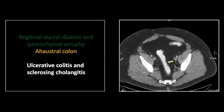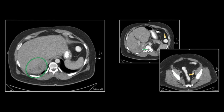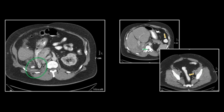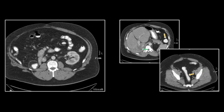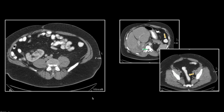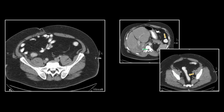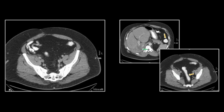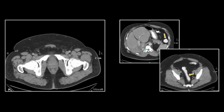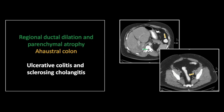Here again you see the hypodense featureless colonic wall involving the entirety of the colon. Note the parenchymal atrophy and the approximation of dilated ducts. Obviously there is evidence as well of a prior hepatic resection. Note the featureless colon with regions of hypodense bowel wall all throughout the entirety of the colon, involving even the sigmoid and rectum. Pretty much classic chronic ulcerative colitis findings and the classic appearance of its associated sclerosing cholangitis.